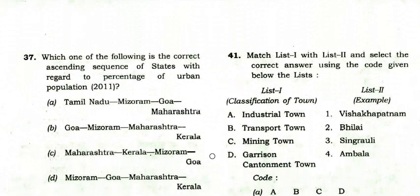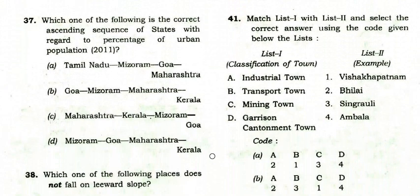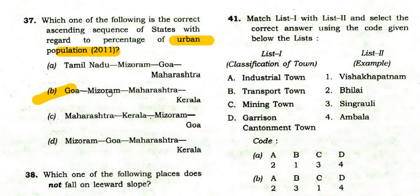Which is the correct ascending sequence of states with regard to percentage of urban population by 2011 Census? The right option is B: Goa (first in ascending), then Mizoram, then Maharashtra, then Kerala.